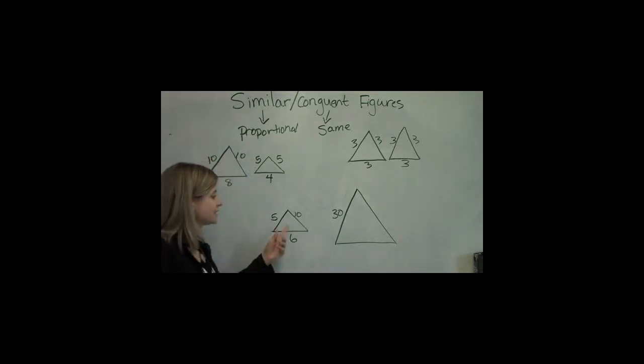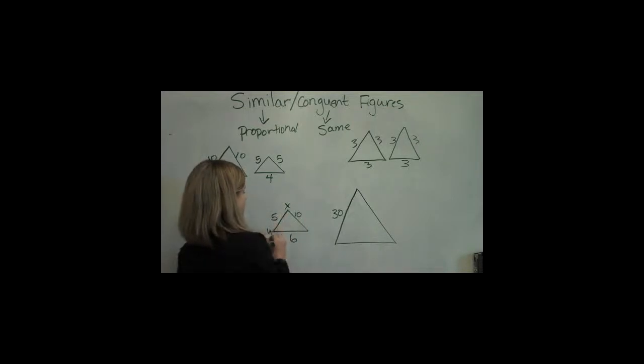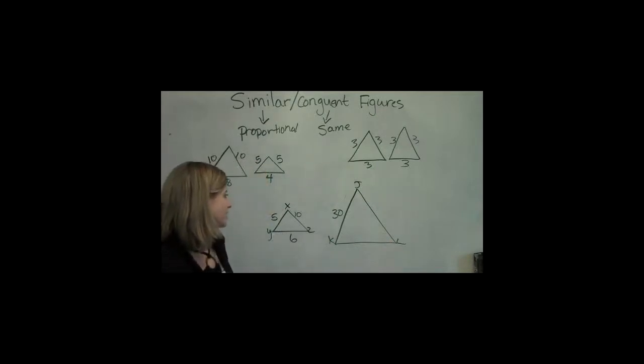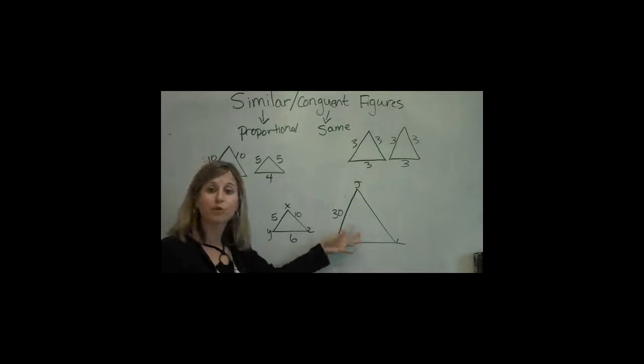So my question is, let's say you're given two triangles here. And maybe you're asked to find the perimeter. This is x, y, z, and this is j, k, l. If they're similar to each other, that means they are proportional.